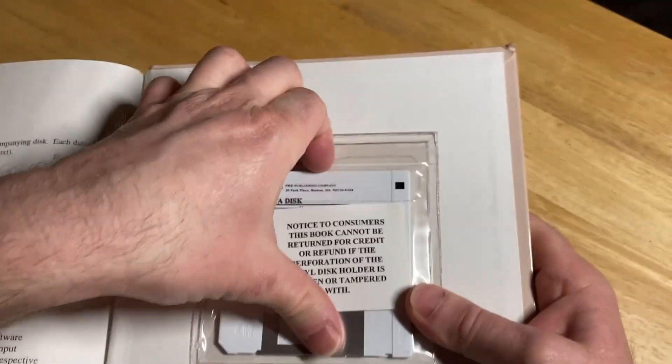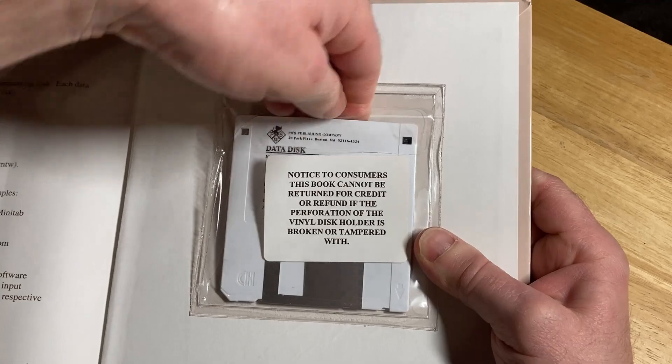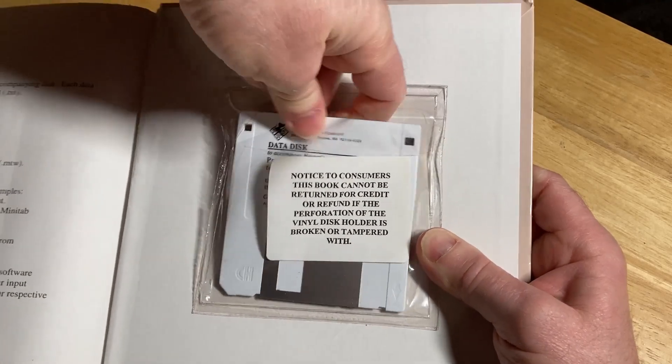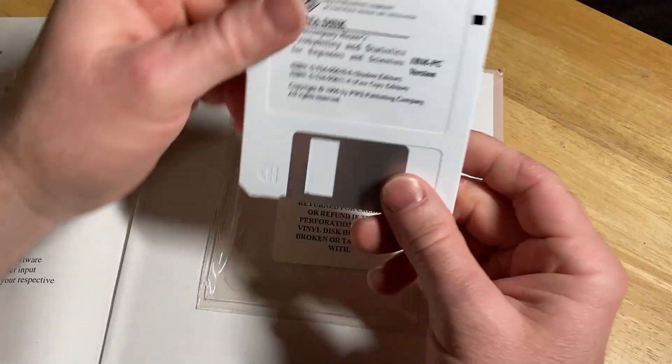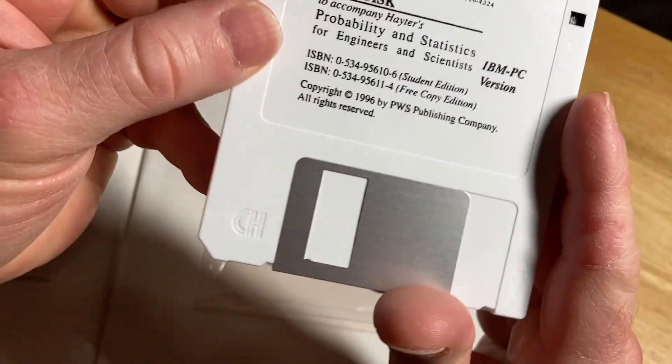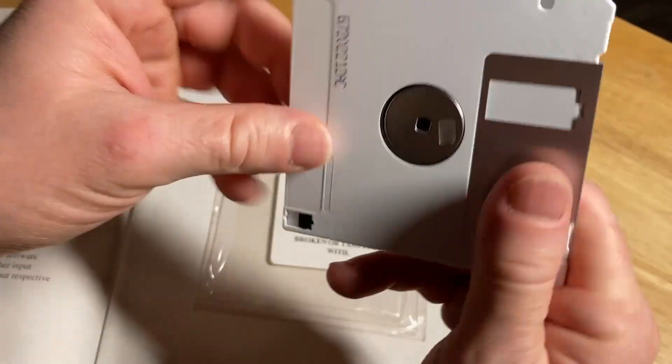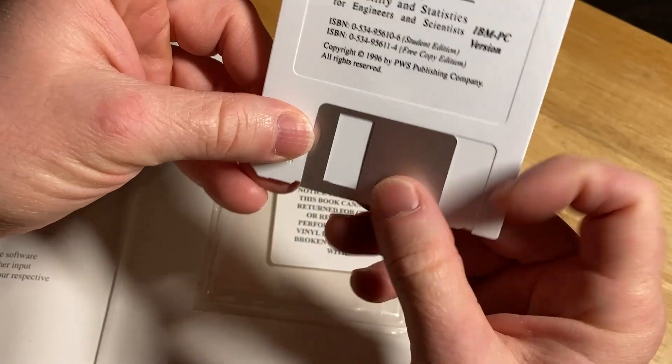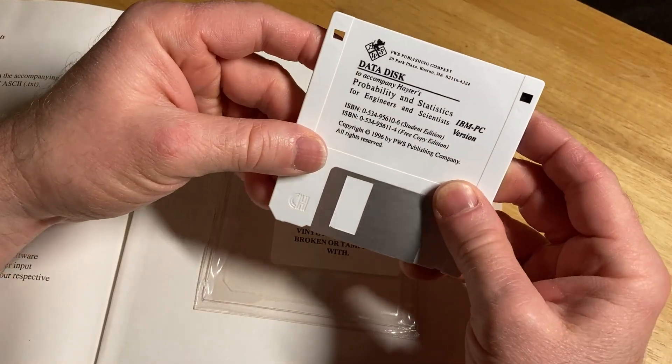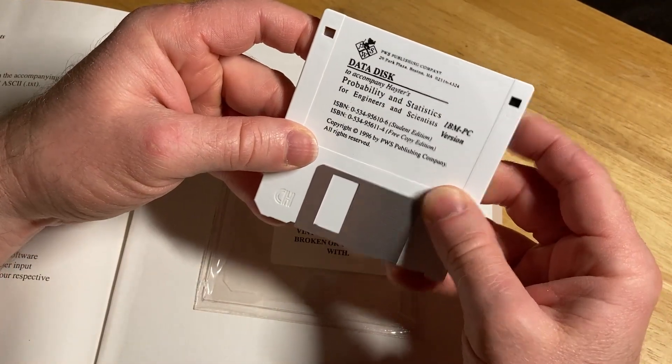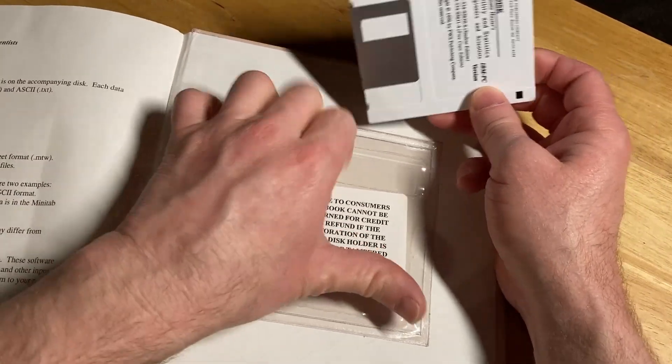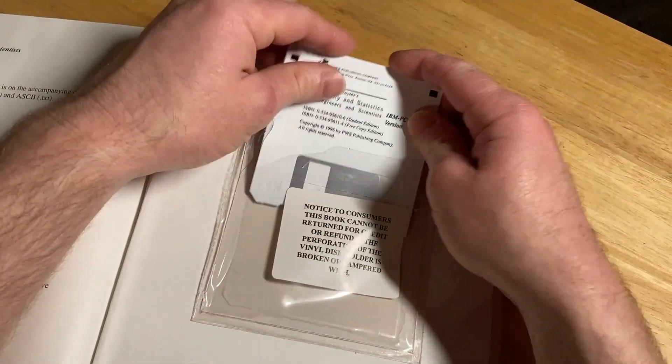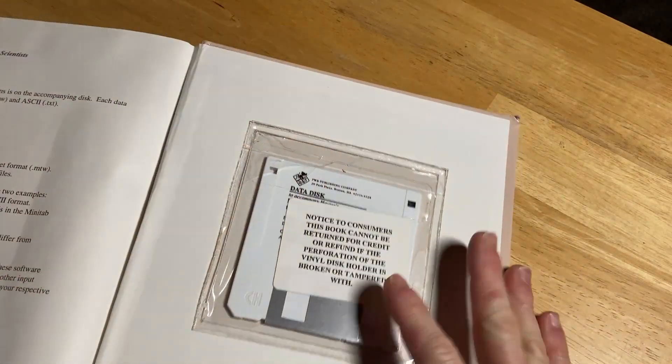Look at this, this is a floppy disk. I might be able to get my money back. Really old school, copyright 1996. This is like a piece of history. I know it's just a floppy disk and it was a thing that was common back in the past, but no one uses these anymore. So it's kind of fun to see it in a book here.